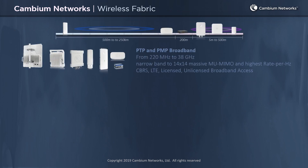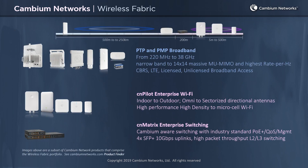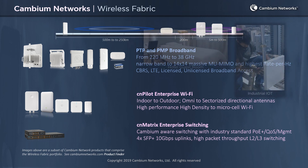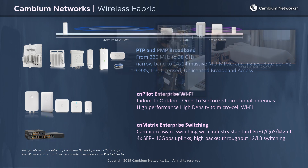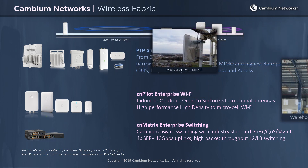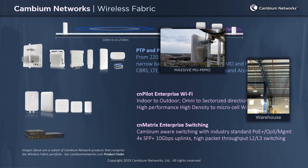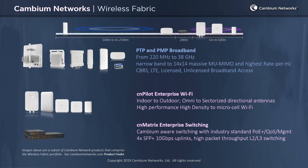Only Cambium Networks delivers a full wireless fabric from 250 kilometers to 5 meters, from microcell to long range, purposely engineered for diverse markets from industrial IoT to a hotel guest room, from a logistics warehouse to high-capacity outdoor wireless broadband. Recently, Cambium introduced a line of Ethernet switches to complement the wireless fabric. The CNMatrix enterprise switches are Cambium access point aware and integrate seamlessly into the wireless fabric.